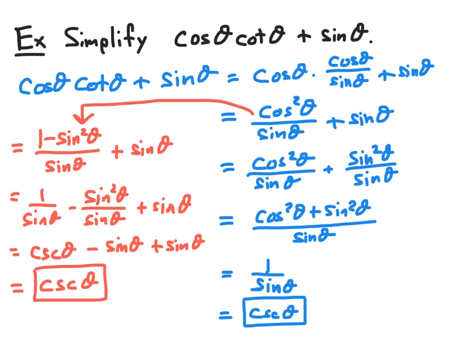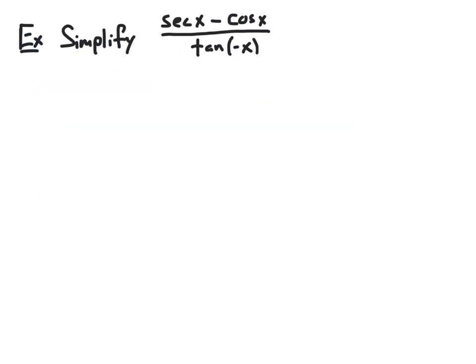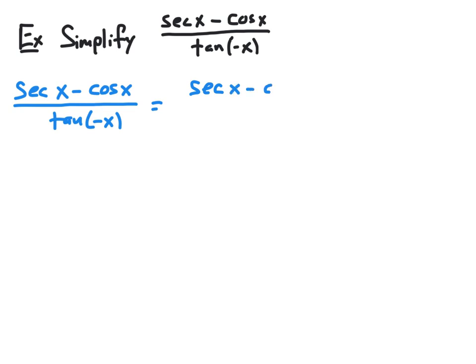Let's take a look at another example. We want to simplify the expression secant x minus cosine x, all divided by tangent of negative x. We'll follow the same procedure, applying trig identities or algebra step by step. The first thing we can do is deal with the tangent of negative x in the denominator. We use the fact that tangent is an odd function to rewrite tangent of negative x as the negative of tangent of x.